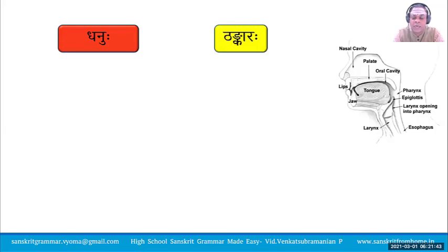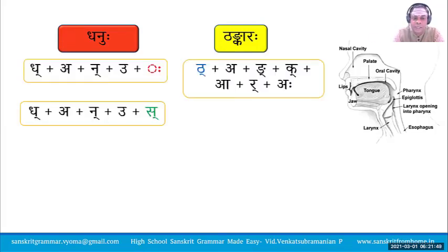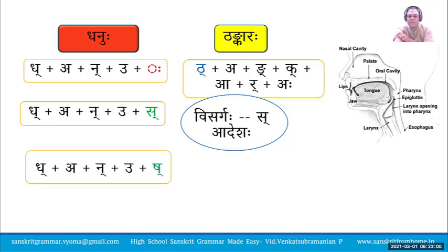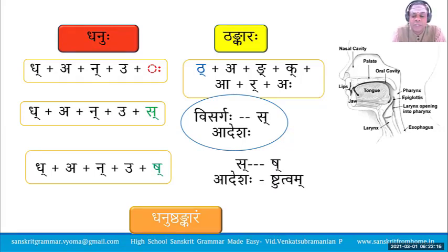For Dhanuhu Thankaraha: Visarga is followed by Tha, so Visarga gets replaced by Sakara — Visarga Sakaradesha Sandhi. Then Shchutva Sandhi is also possible, so Sakara gets replaced by Shrakara, giving the final form Dhanush Thankaraha. Visarga changing to Sakara is Sakaradesha Sandhi; the Sakara changing to Shrakara is Shchutva Sandhi.